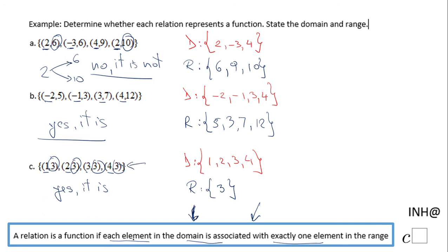Each element in the domain is associated with exactly one element in the range. If you enjoyed this, don't forget to click the like button and come back to C Squared for more help. Thank you.